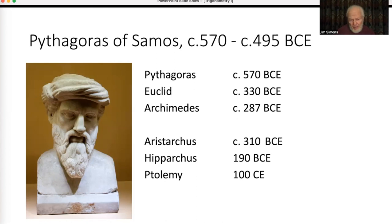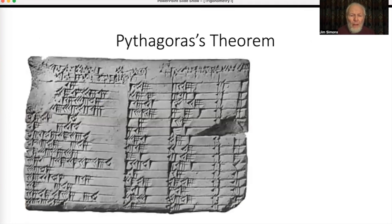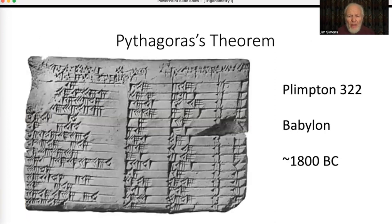The one thing we know for certain about Pythagoras is that he didn't invent or discover Pythagoras' theorem. Here's how we know that: this is a Babylonian clay tablet called Plimpton 322 — the 322nd item in Mr. Plimpton's collection. It comes from Babylon, about 1800 BC, which is well over a thousand years before Pythagoras. It's a Babylonian spreadsheet with columns of numbers.